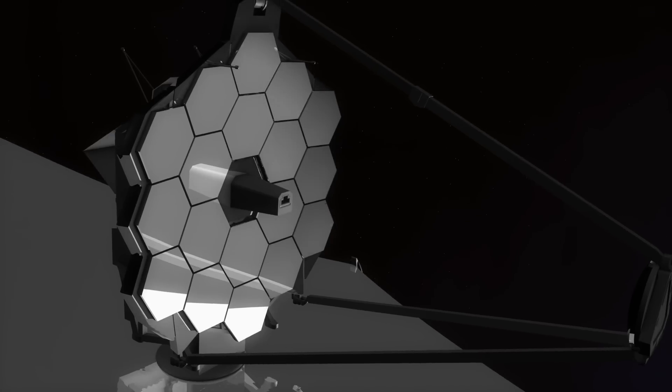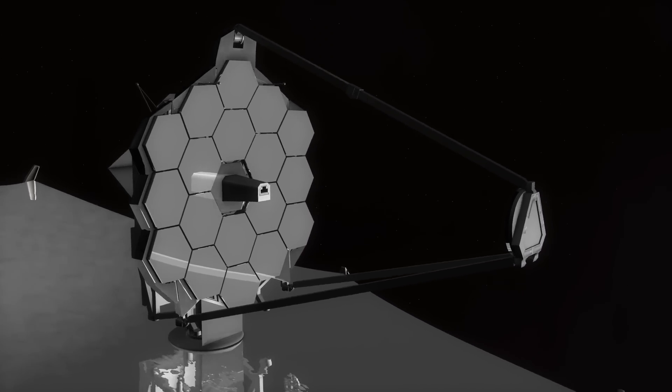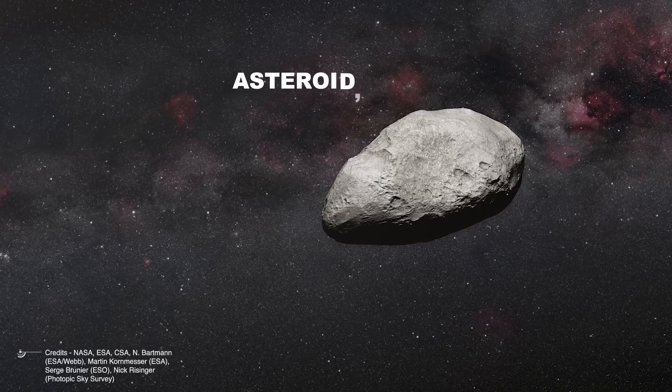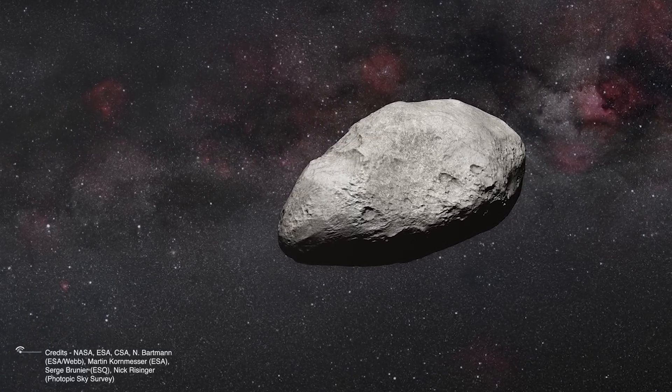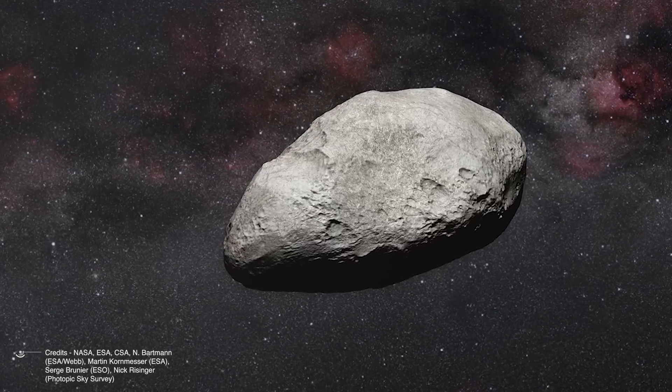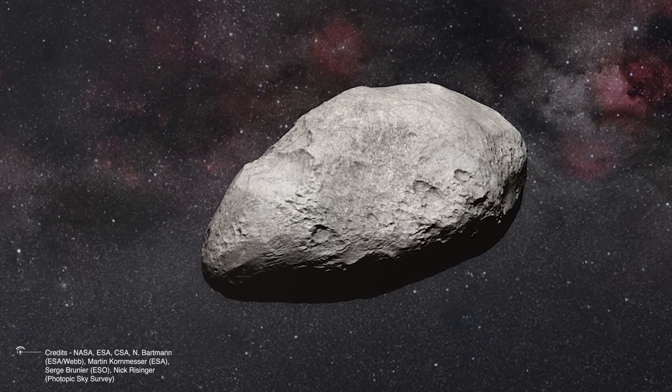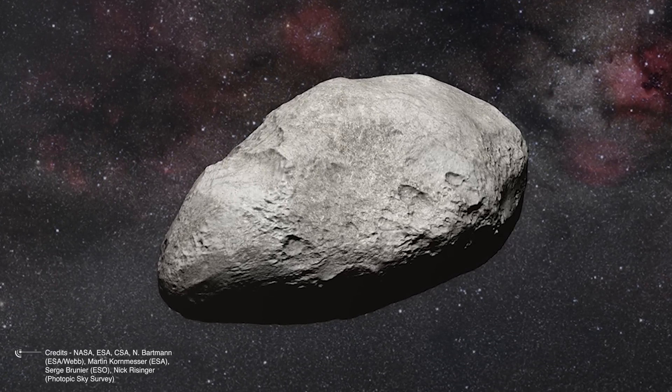The telescope was pointed at the main asteroid belt between Mars and Jupiter to test MIRI's filters. However, the targeted asteroid 10920 was too bright for the necessary measurements, and the initial calibration tests were deemed a failure. Instead of dismissing the exercise, the team used the MIRI data to develop a new method for calculating an object's orbit and size.